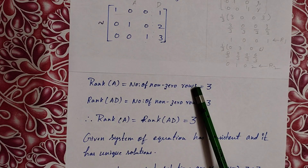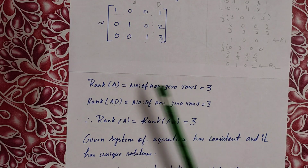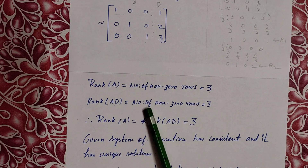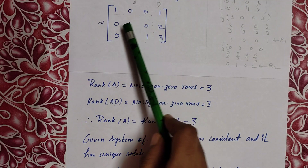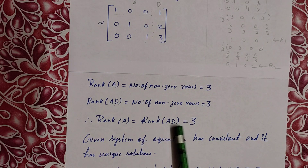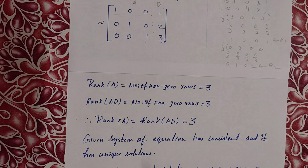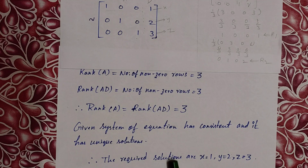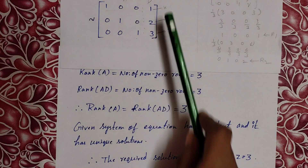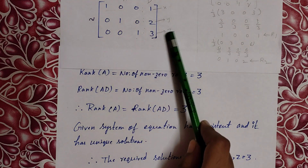Rank of A equals number of nonzero rows = 3. Rank of [A|D] equals number of nonzero rows of the complete matrix = 3. Since rank of A equals rank of [A|D] equals 3, the given system of equations is consistent and has a unique solution. Therefore x equals 1, y equals 2, and z equals 3.